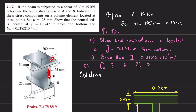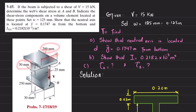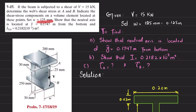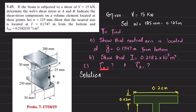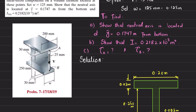The beam has a shear force V applied. The beam dimensions are: flange width 200 millimeter, top flange thickness 30 millimeter, web thickness 25 millimeter, bottom flange thickness 30 millimeter, and w = 125 millimeter. We need to show the neutral axis location, find I about the neutral axis, and find shear stress at points A and B.